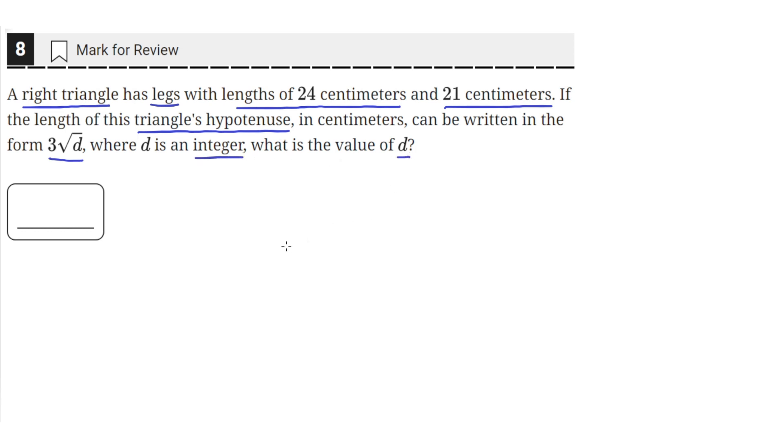what is the value of d? So we have this right triangle whose legs have a length of 24 centimeters and 21 centimeters, and the hypotenuse can be written in the form 3 times square root of d.